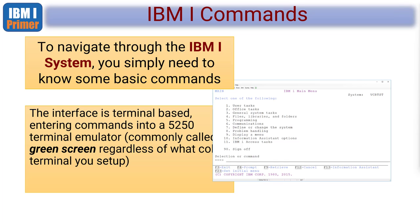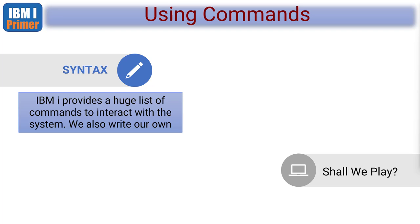This interface is called the 5250 terminal emulator. The example on the screen is the IBM ACS version - the Access Client Solution. It's commonly called 'green screen', even though in my screen examples they're white screens - that's because I've selected a white background with black text. Everyone can set their own screens up in Windows, Mac, or Linux exactly how they want. It doesn't affect how they run.